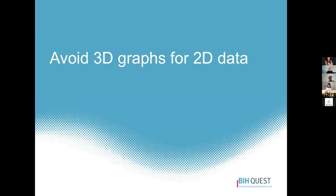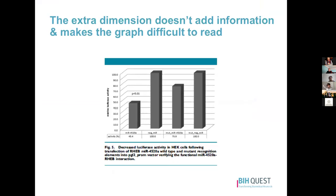Last thing: avoid 3D graphs for 2D data. It's not a particularly common problem but you see it from time to time. Here we have 2D data — simply comparing four groups and the proportion for each — but the authors have added a third dimension that doesn't need to be there. This makes the graph hard to interpret: people don't know whether to read from the back or front of the graph, it's hard to follow around the corner and estimate values, and it makes it more difficult to compare the relative heights of bars. The extra dimension adds no information while making the graph difficult to read. Avoid this.